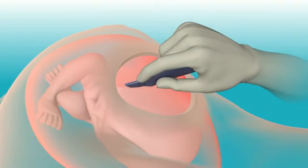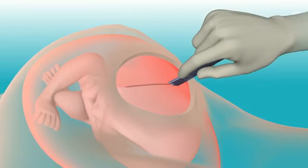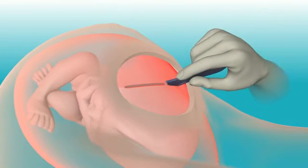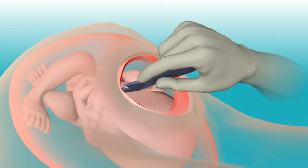If the uterine wall is unlabored or thick, the surgeon can make several C-Safe passes transversely until they can safely puncture into the cavity.